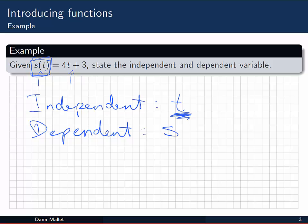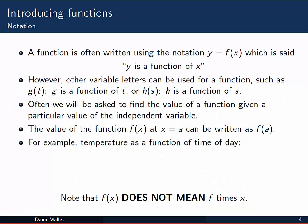So s is a function of t, or s depends on t—it's another way of reading that. This brings us to actually talking about that notation. A function is often written using the notation y equals f of x, and that's exactly how we say it: y is a function of x.